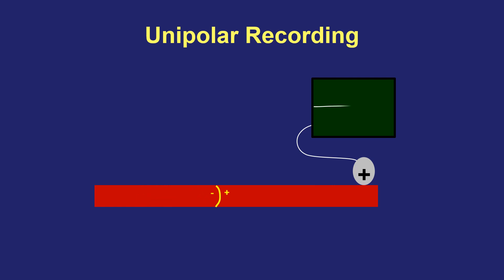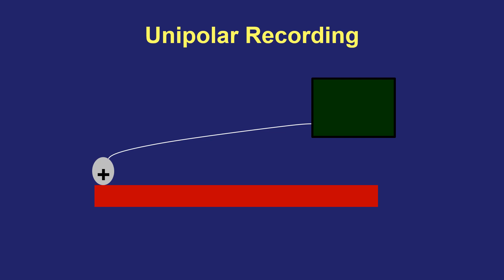If the electrode is positioned at the very dead end of the tissue, you'll have a much longer period where the wavefront is out of the field of view. You'll see a positive deflection as the wavefront moves toward and underneath the electrode, but because the wavefront never moves away from the electrode, there's no negative deflection. Conversely, if you place the electrode at the very beginning of the strip where the signal starts, you'll see only a negative deflection — because the wavefront is moving away from the recording electrode until it gets far enough away and then there's a flat or absent recording.